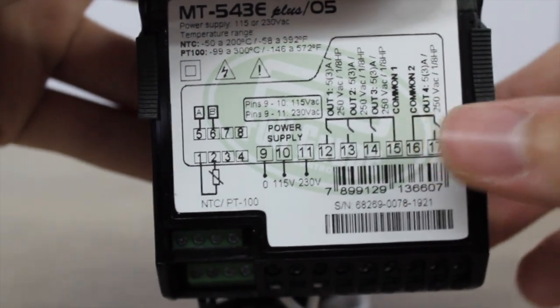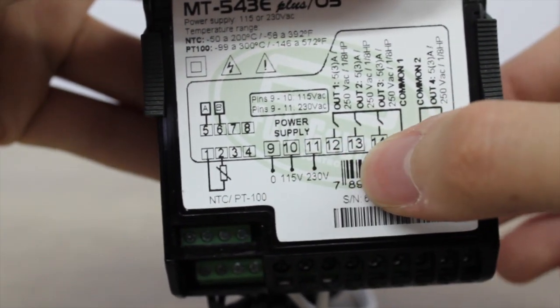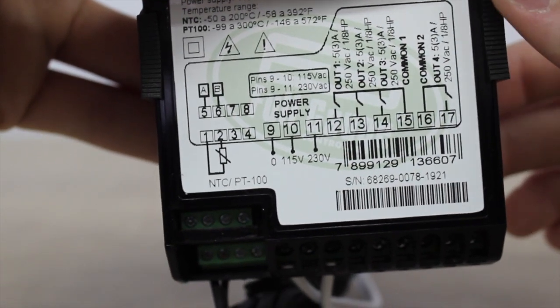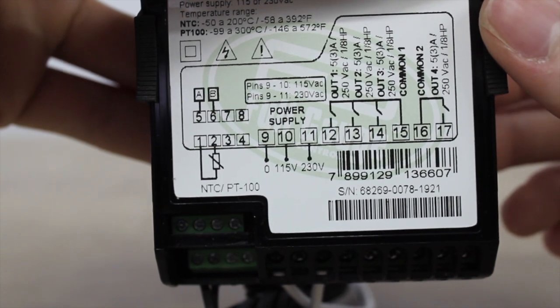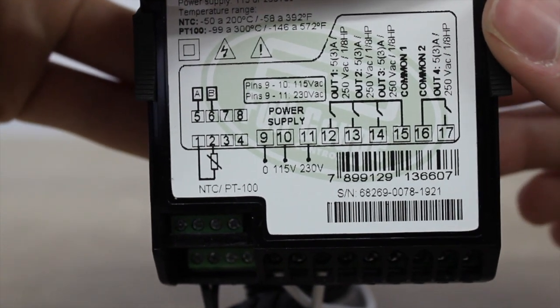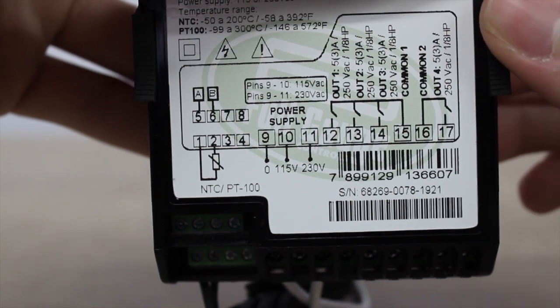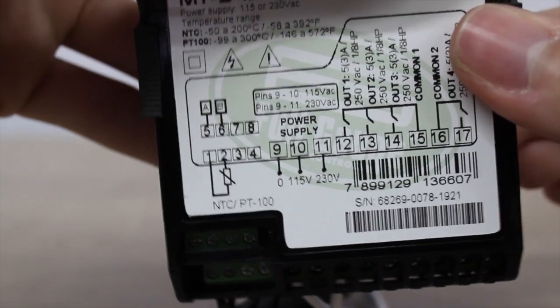The MT543E+ has four outputs. The first and the second output can be configured for cooling or heating, and the other two outputs can be set as cooling, heating, cyclical timer or alarms.